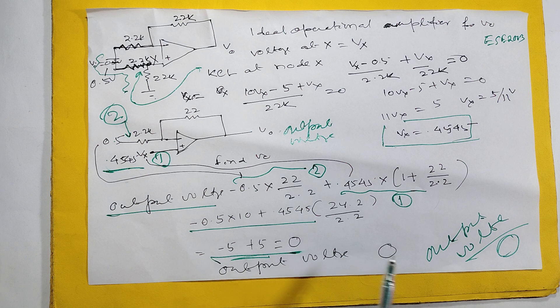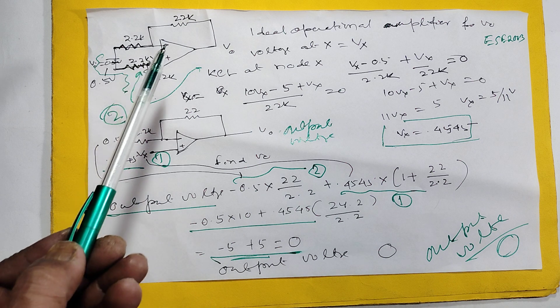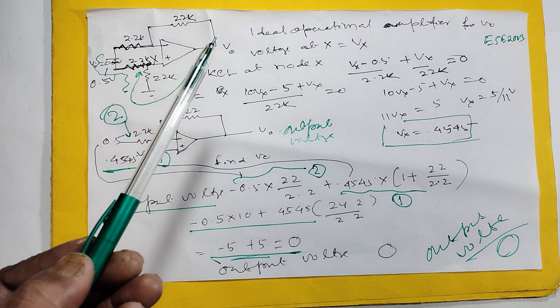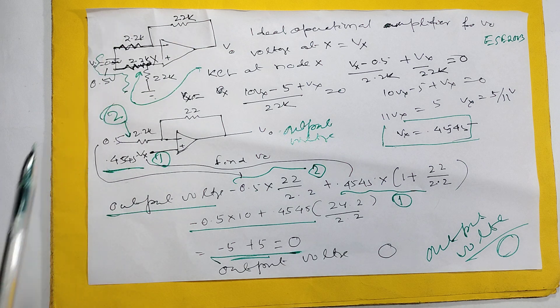So it is coming minus 5 plus 5, zero. So ultimate output voltage is coming to zero. Completed.